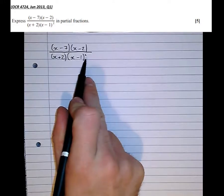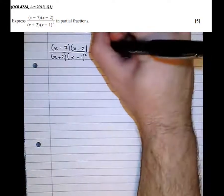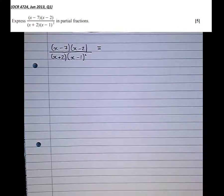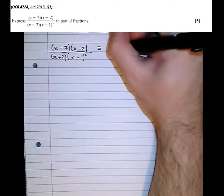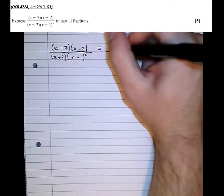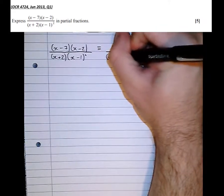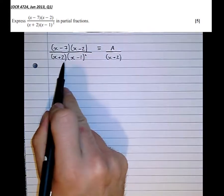And this one with a square bracket causes a bit of a twist. So separate them out into separate factors. The first factor on the denominator is x plus 2. The second one, x minus 1 squared.